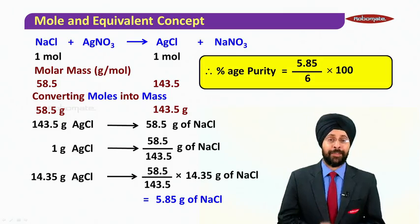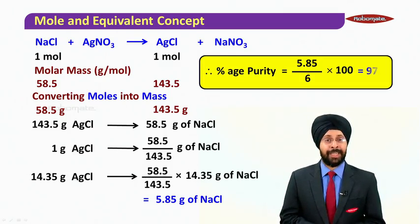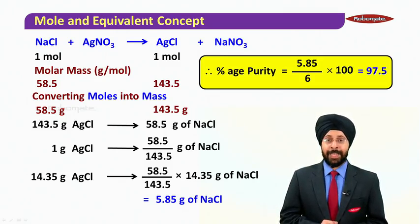So percentage purity is simply 5.85 divided by 6 times 100, that is equal to 97.5%.